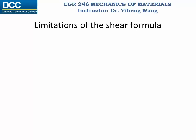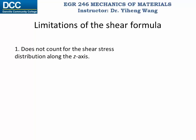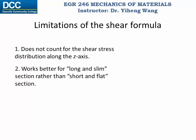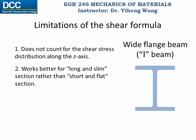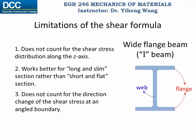This leads us to the limitations of the shear formula. First, the shear formula only accounts for shear stress variation along the x and y directions; it does not account for shear stress distribution along the z-axis. Second, it works better for long and slim sections — it doesn't work as well for short and flat sections. For example, for a wide-flange beam or I-beam, the shear formula gives better predictions for the web than the flange. However, that is acceptable because most of the time we are only interested in the maximum shear stress, which does occur at the web. Third, the shear formula does not account for the direction change of shear stress at an angled boundary — according to the formula the distribution looks uniform, when in fact the shear stress should be along the boundary.